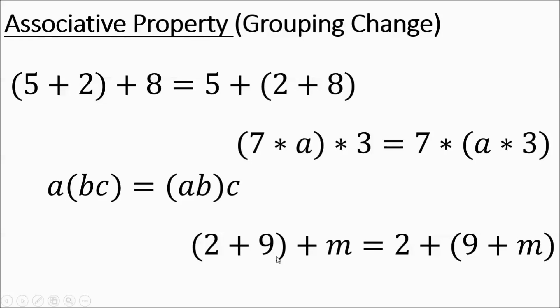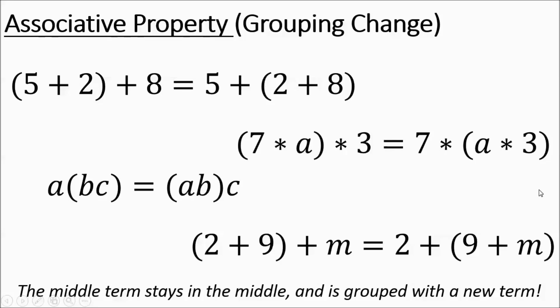2 plus 9 plus M. 2 plus 9 plus M. Same terms. Same order in which they appear. But the grouping is changed. Here 9 is grouped with the 2. So the two constants are grouped together. Here a constant is grouped with a variable. The other thing I want you to notice is how the middle term stays in the middle on both sides of the equation and it's grouped with a new term.